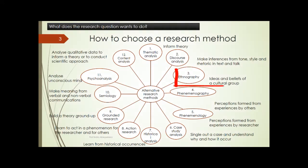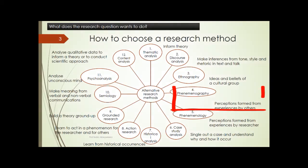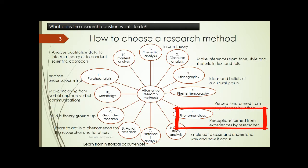Third is ethnography: we will look at ideas and beliefs of a cultural group. Fourth, phenomenography: we'll be looking at how others have experienced a given phenomenon, with variations in experiences and the perceptions that follow. Fifth is phenomenology: we can look as researchers at our own experiences about a given phenomenon and the perceptions that follow.